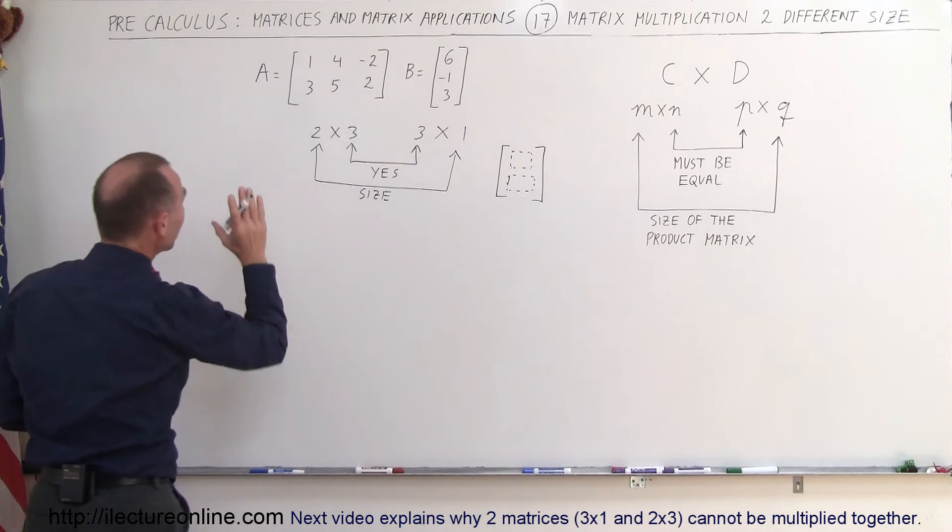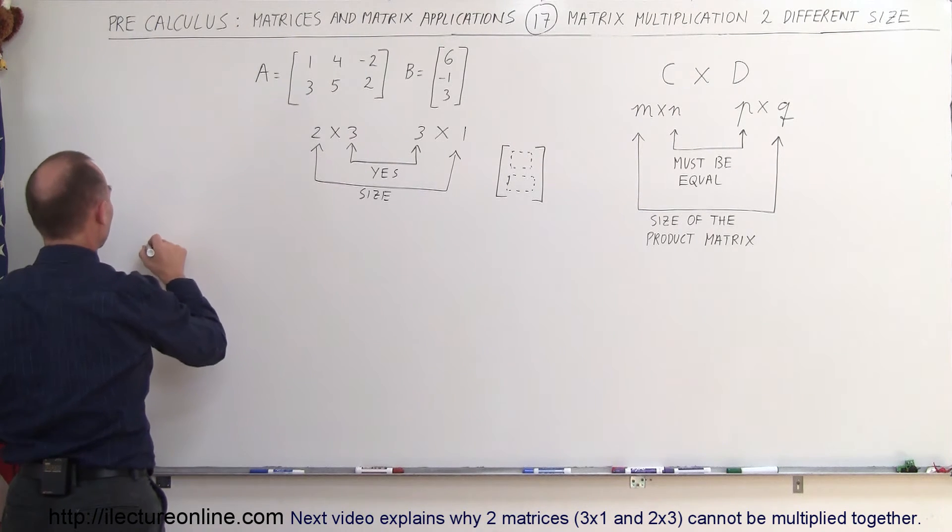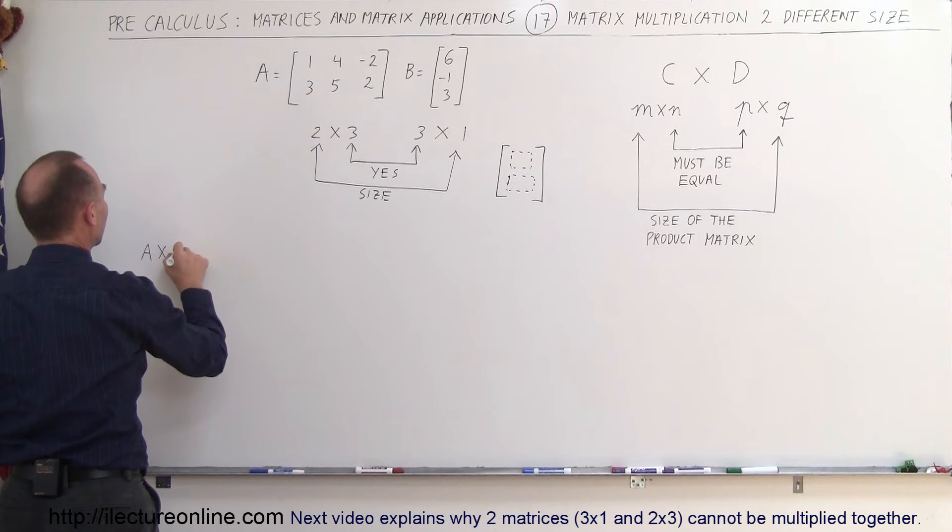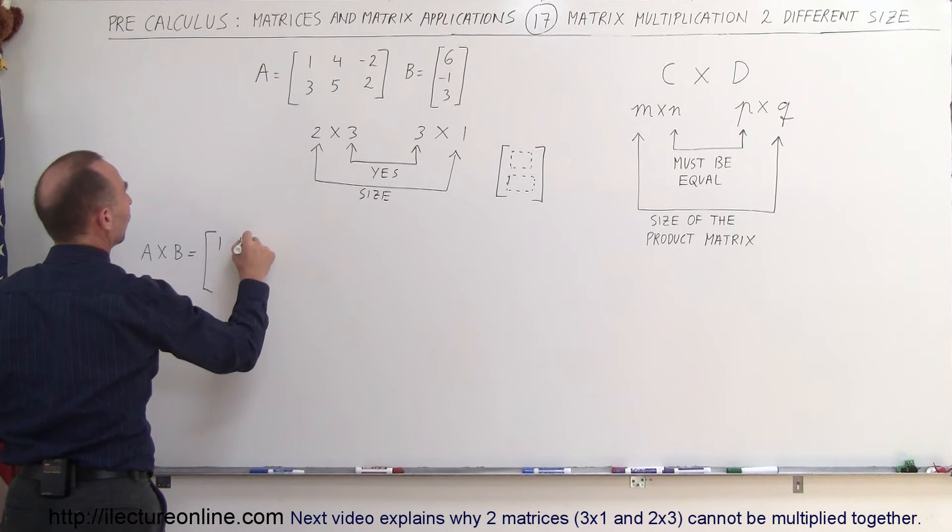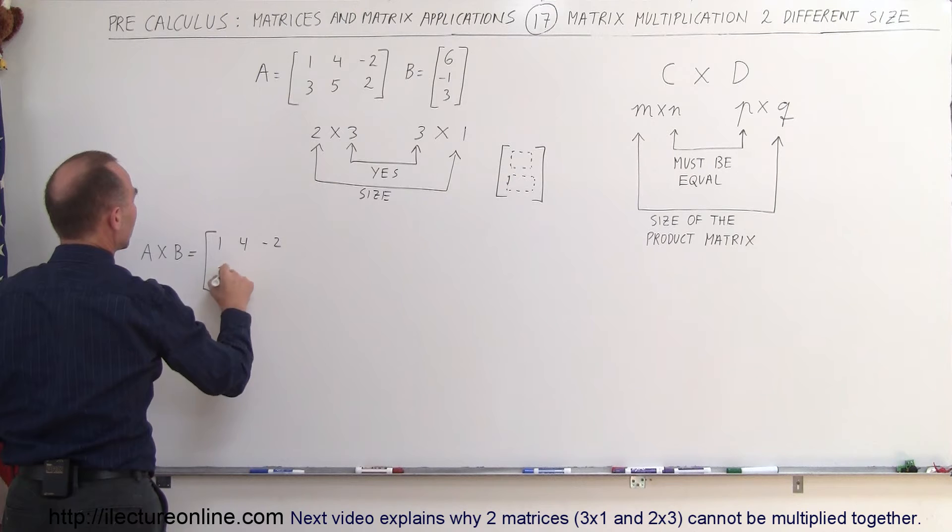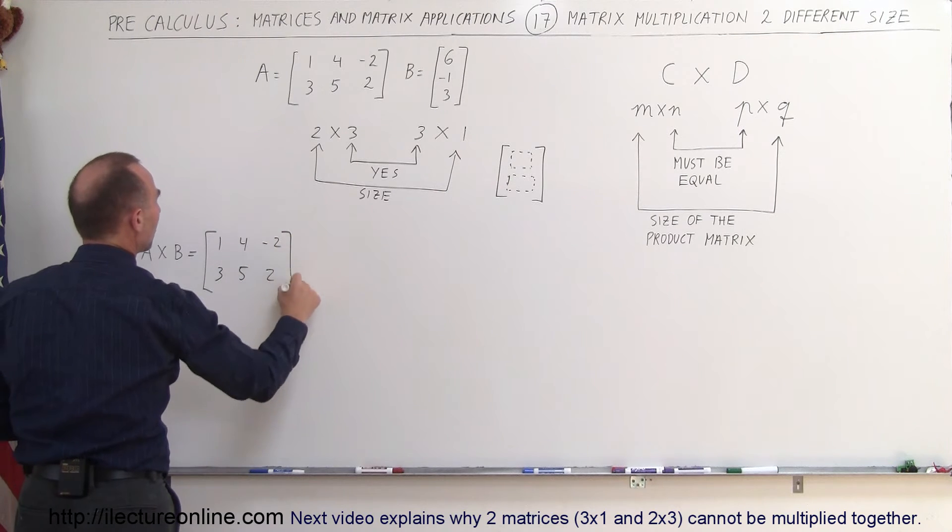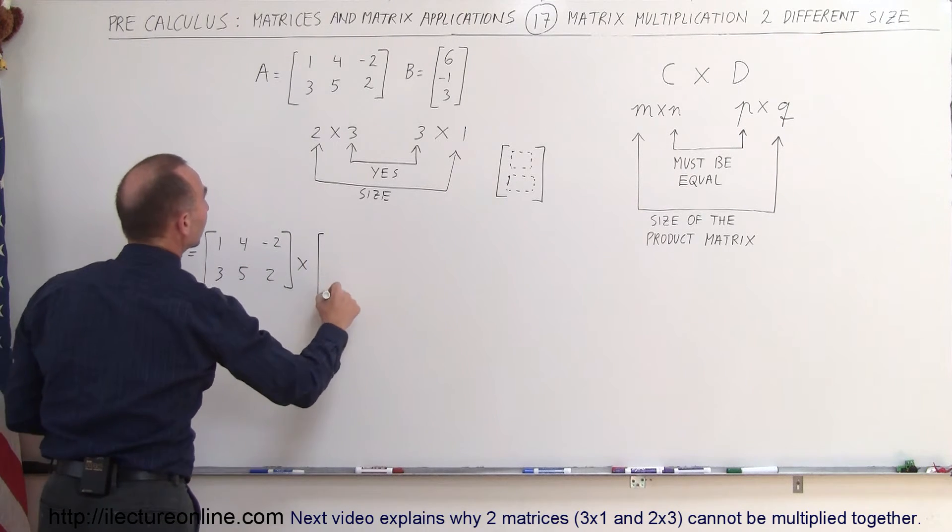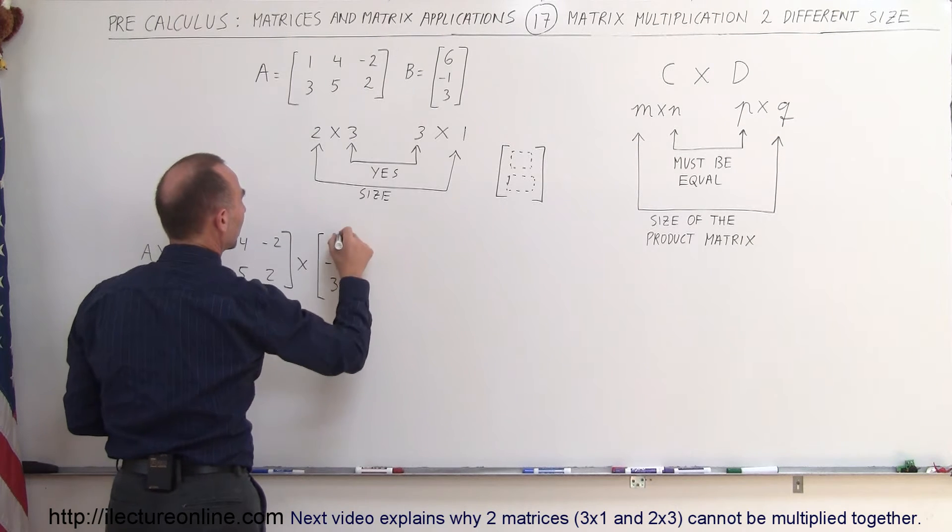All right, so how do we multiply these together? So here we have A multiplied times matrix B, which is equal to 1, 4, negative 2, 3, 5, 2 multiplied times the matrix 6, negative 1, and 3.